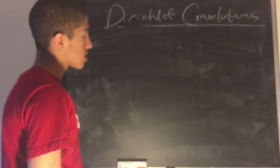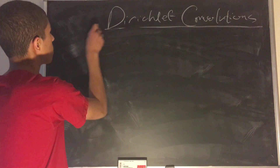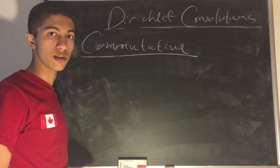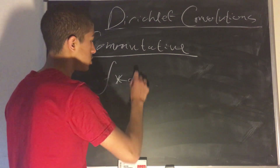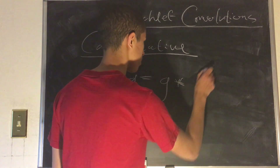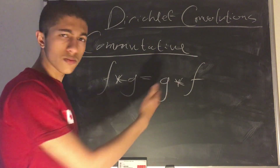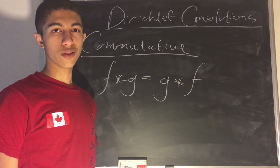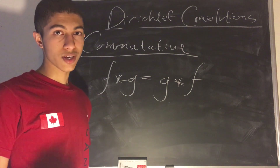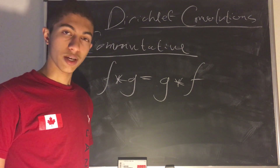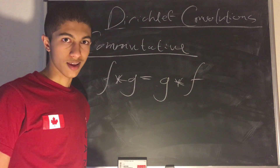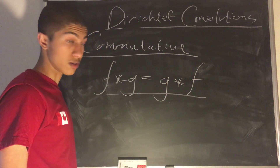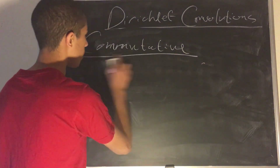One interesting fact about Dirichlet convolutions is that they are commutative. That means that f convoluted with g is equal to g convoluted with f. For contrast, this is certainly not true for matrix multiplication — matrix A times matrix B does not generally equal matrix B times matrix A. But Dirichlet convolutions most certainly are commutative.